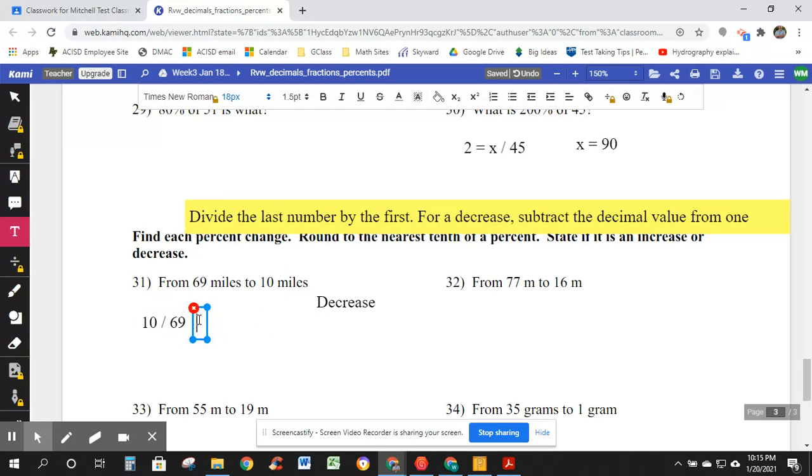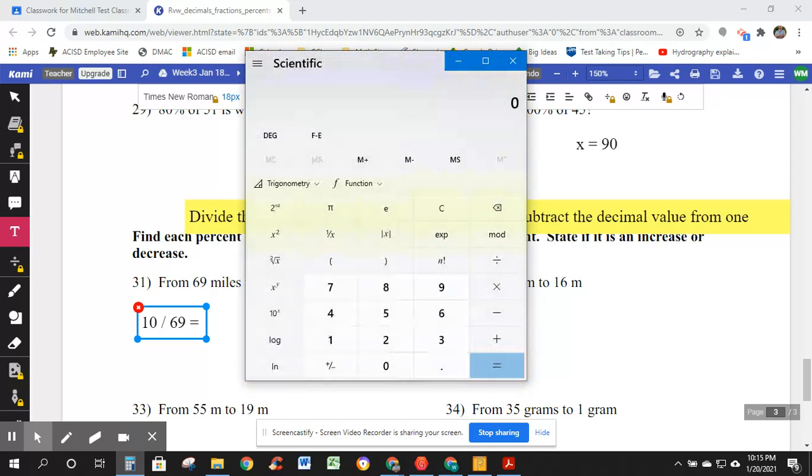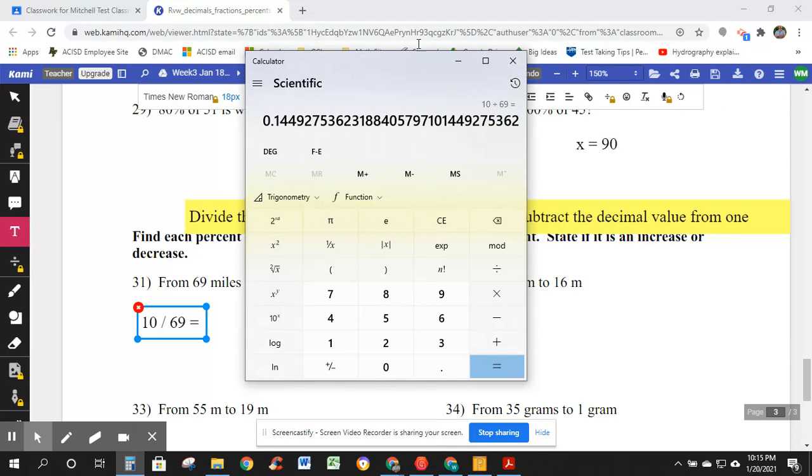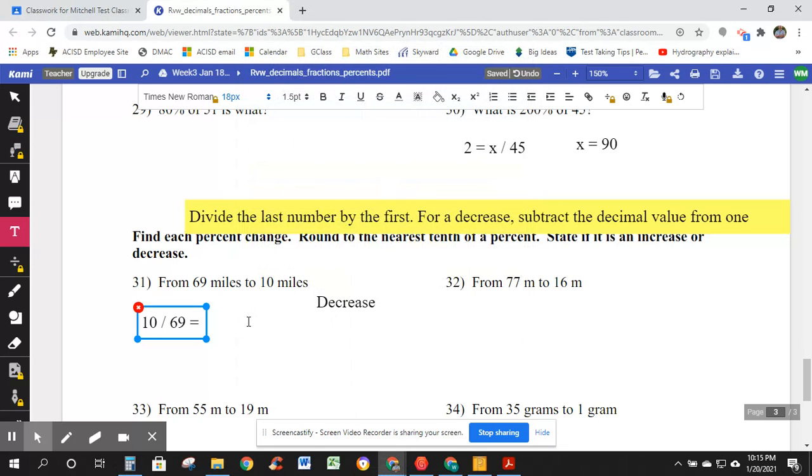10 divided by 69. Add in my calculator. 0.145. 0.145. Now, what it says is, for decrease, subtract the decimal value from one. One minus 0.145 to 0.855. And we have described our decrease. 85.5%. A value of 69 miles reduced to 10. It's almost an 86% reduction. It decreased by 85%.